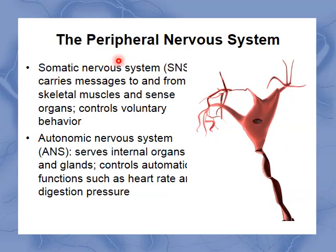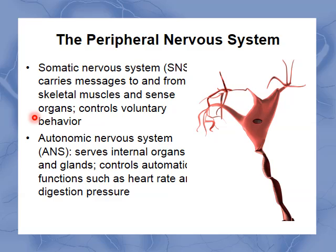The peripheral nervous system is broken into two areas. The autonomic nervous system is the one that controls all the automated things — your organs, glands, heart rate, and digestion. You don't think about your heart beating; it just beats, controlled by the autonomic nervous system. Everything else — your muscles, movement, and voluntary control — comes out of the somatic nervous system. So if you raise your hand in class, that's the somatic nervous system. The autonomic is the one we don't control; the somatic is the one we do control.